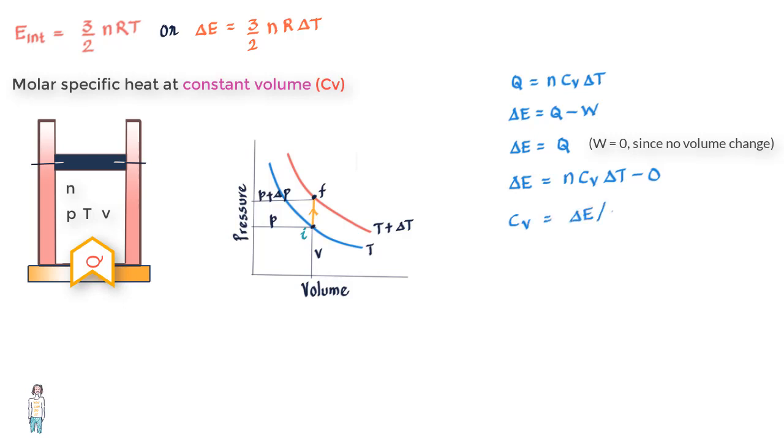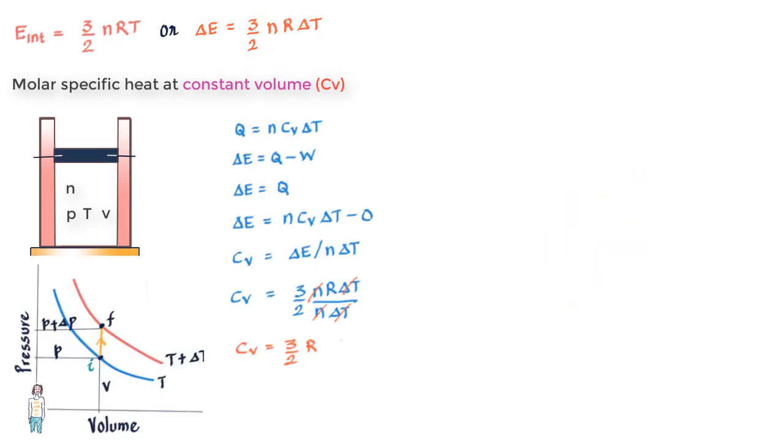Then C_V = ΔE/(n·ΔT). From the earlier equation, ΔE = (3/2)nR·ΔT, so if we substitute this, what we get is C_V = (3/2)R, which equals 12.5 joules per mole Kelvin for a monoatomic gas.